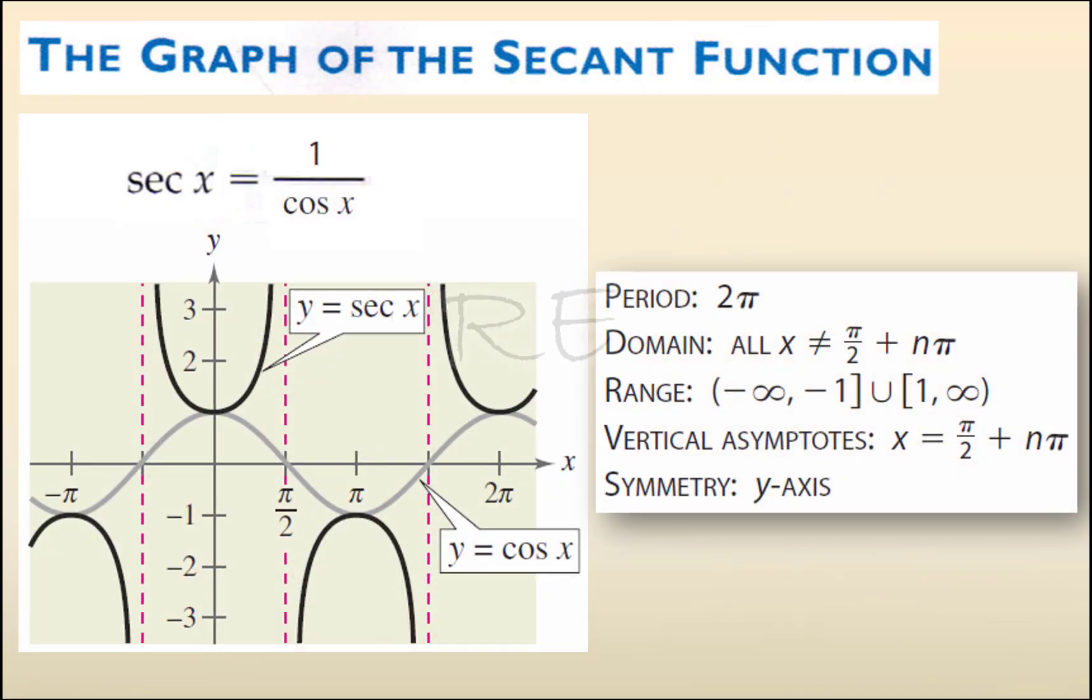For y equals secant x, the period is 2π. The domain is all x different from π/2 plus nπ. The range is from negative infinity to negative 1 included, union 1 to positive infinity included. Symmetry is about the y-axis. In this case, vertical asymptotes are x equals π/2 plus nπ.